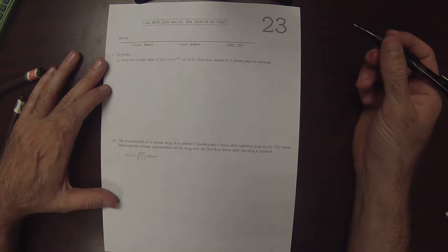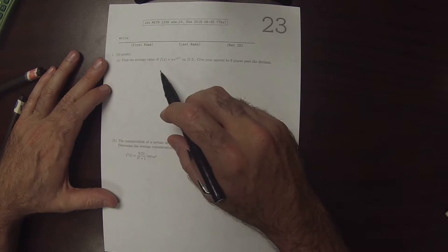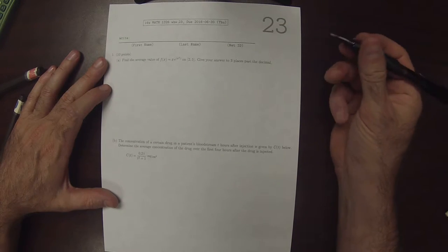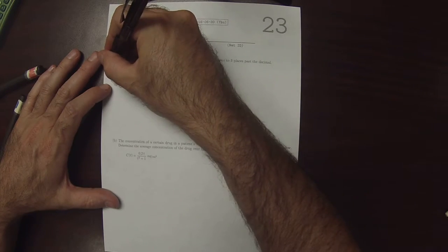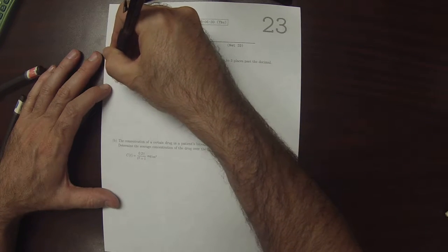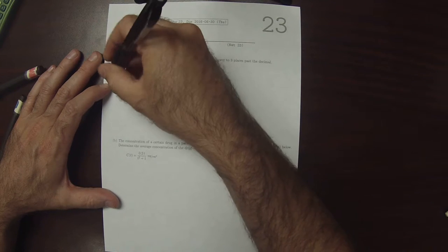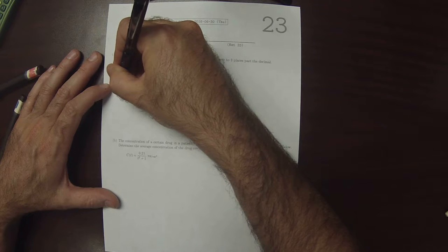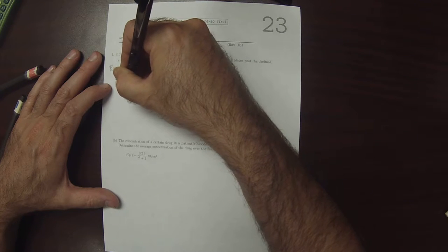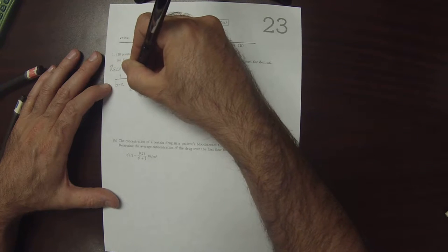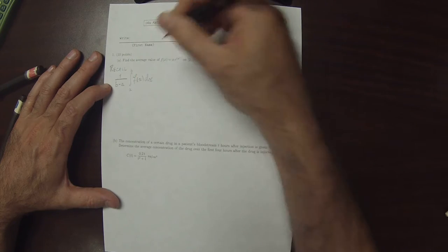This is the solution to written homework 23. In part A, we're requested to find the average value. To recall that formula, the average value formula is 1 over b minus a, integral a to b, f of x dx.